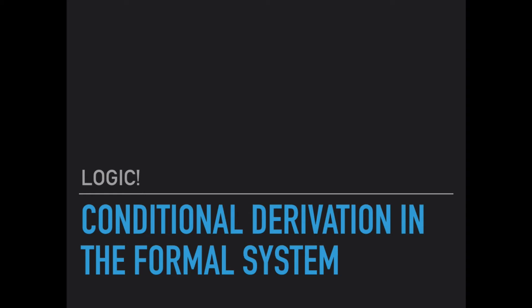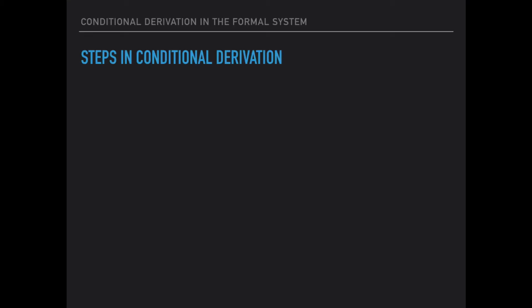In the previous video, we looked at conditional derivation in English, and now we're going to see what a conditional derivation looks like in the formal system. Just to remind you of what the steps of a conditional derivation are: the first thing is not a step, but it's the fact that we're trying to show a conditional. The conclusion of the argument we're trying to derive is a conditional — for example, if it's snowed in Denver, then I will be late.